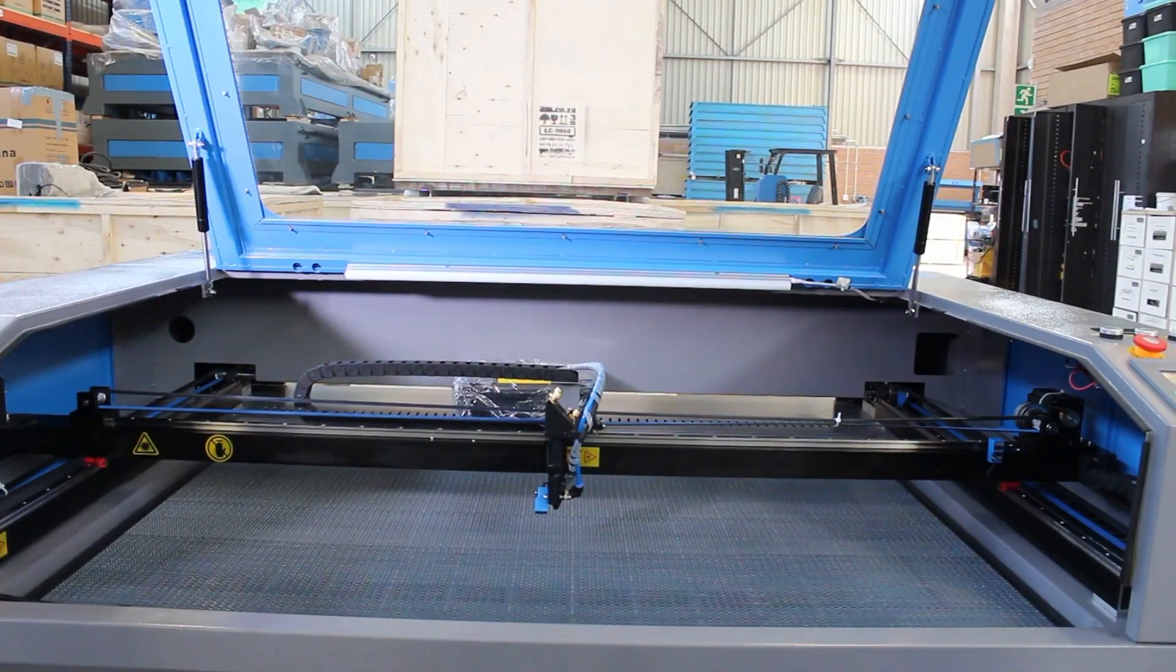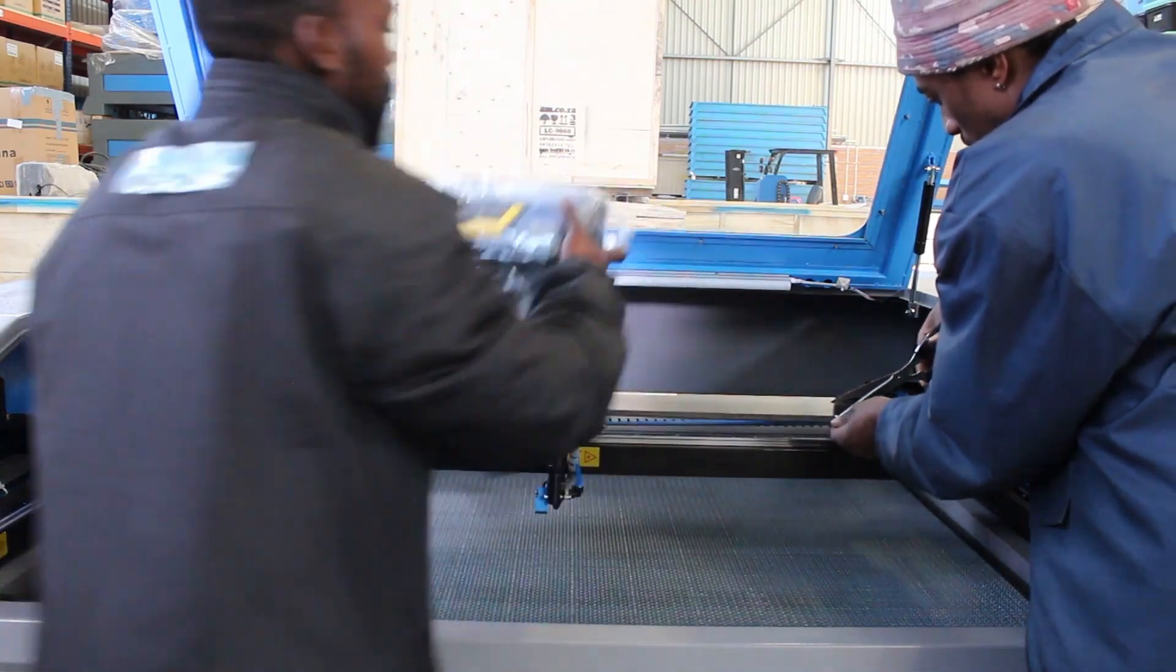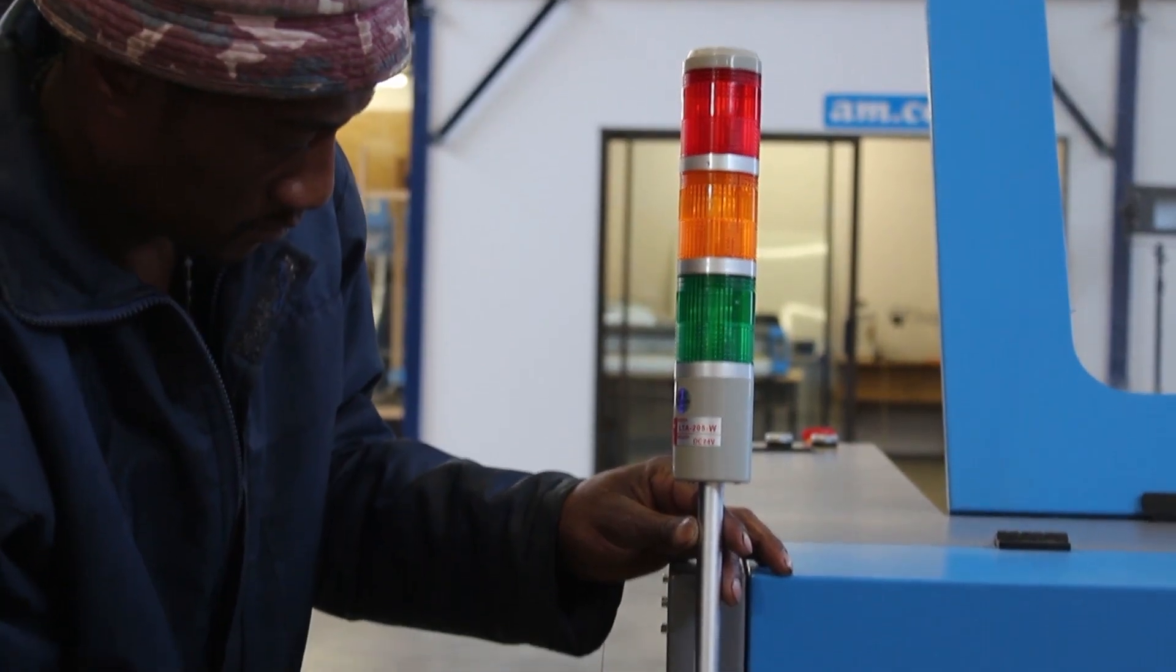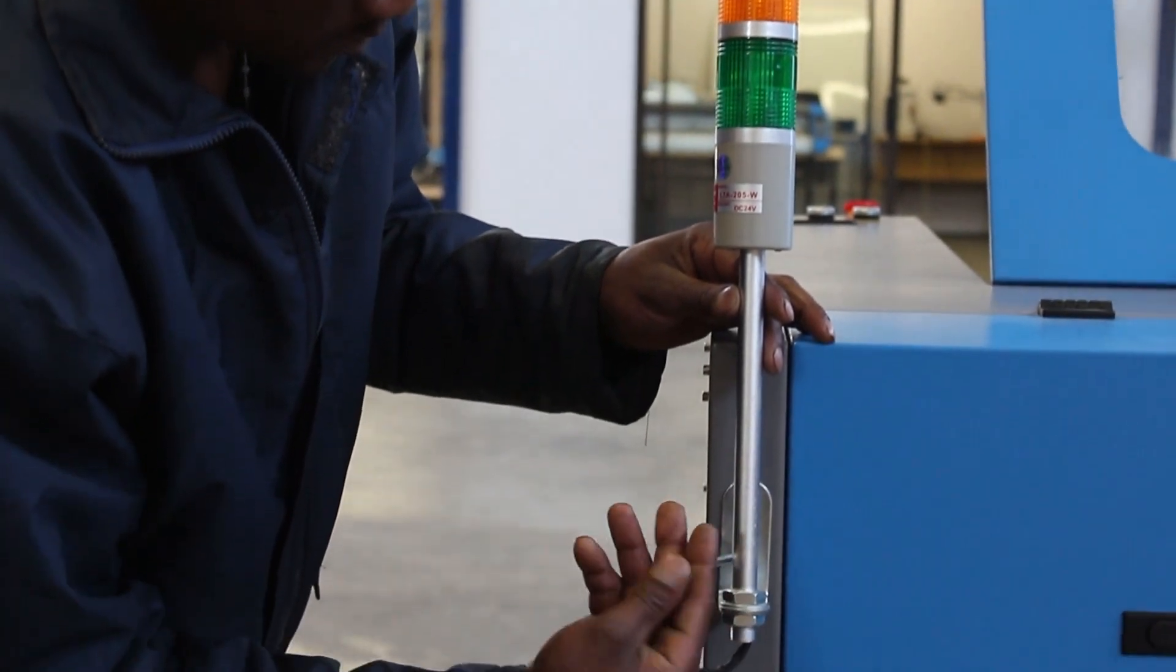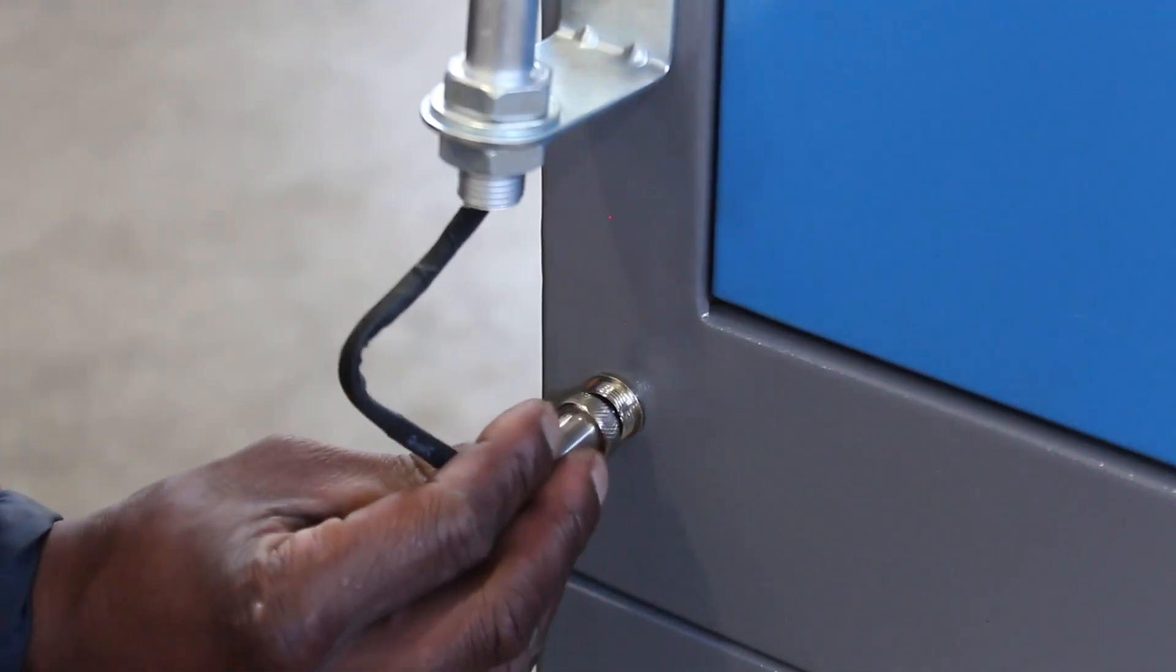All accessories need to be unpacked for installation. These indication lights will be installed at the back of the machine to give you an idea of the current machine status when it's running.